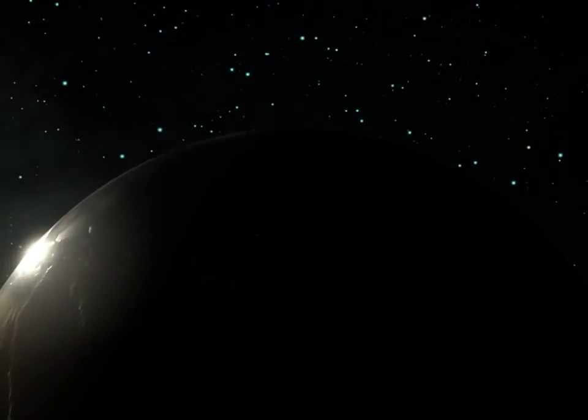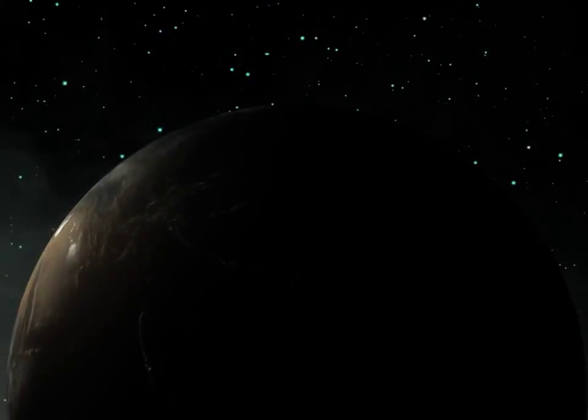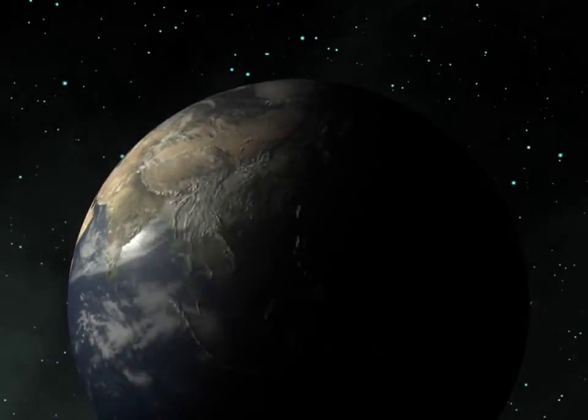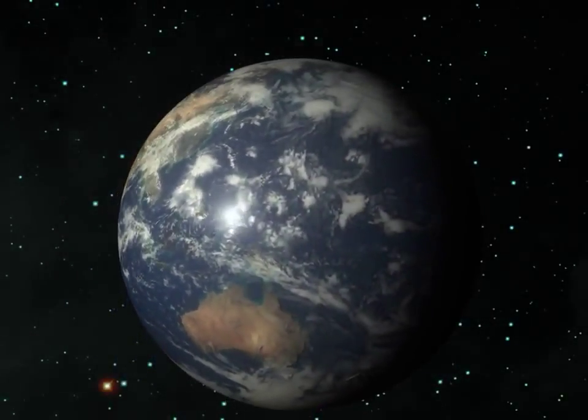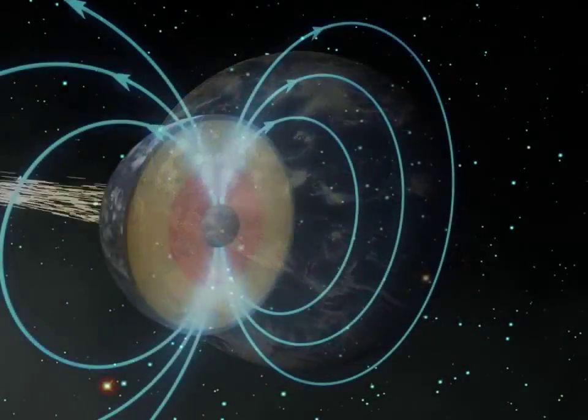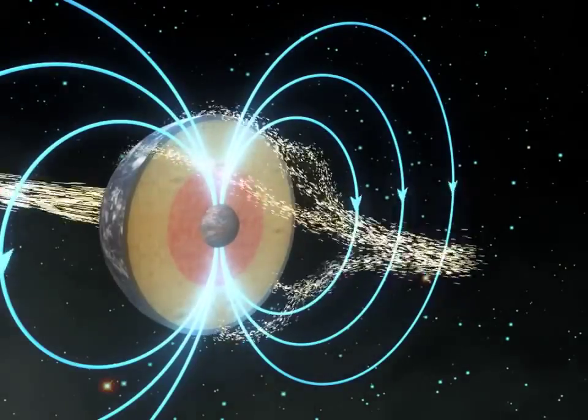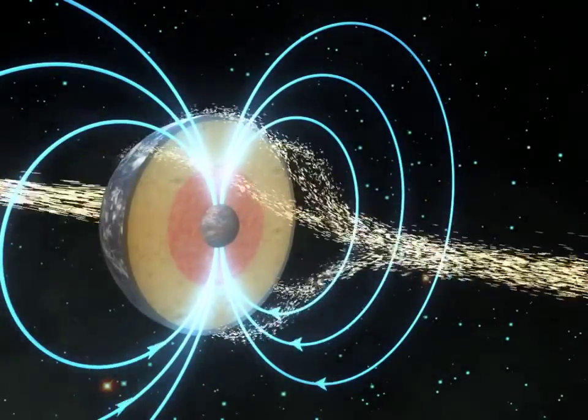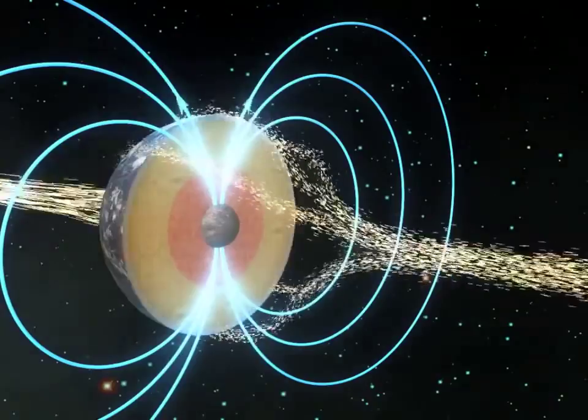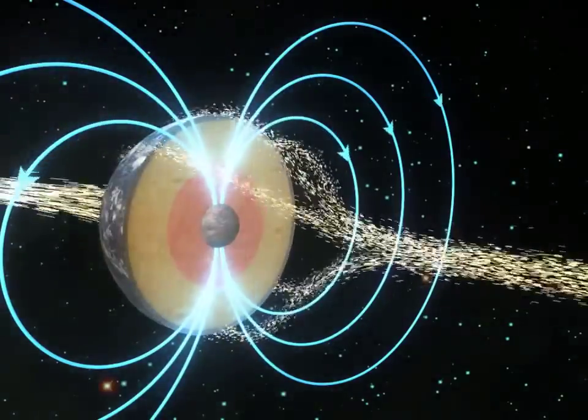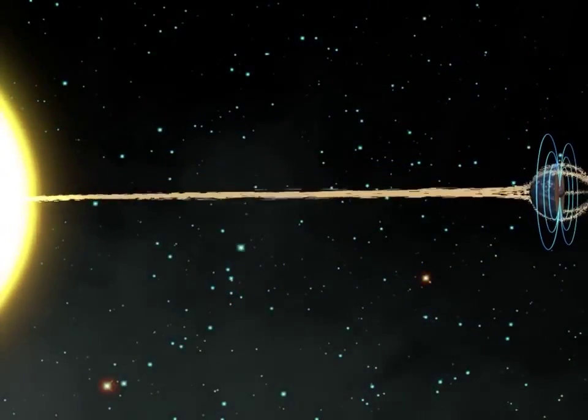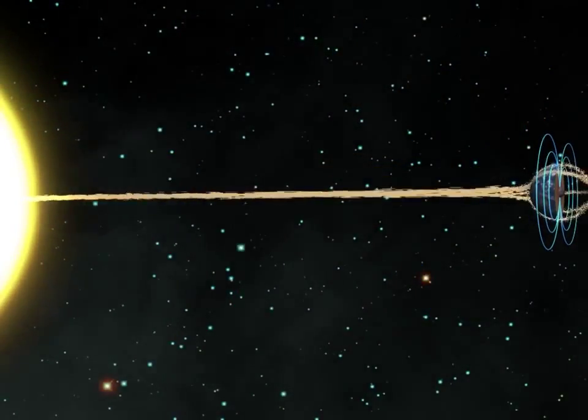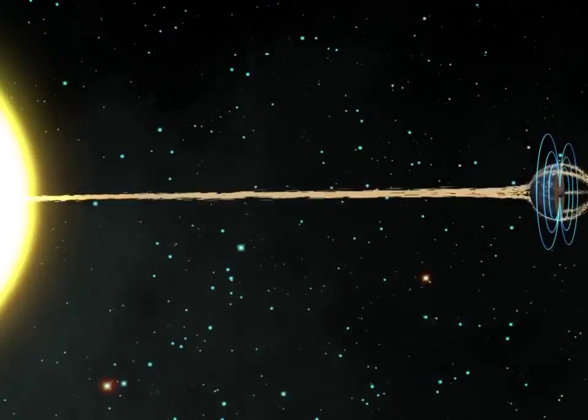But the core also has a very important function. It is responsible for the magnetic field of the earth. The magnetic field is generated in the inner core and the convections within the outer core result in the creation of magnetic fields. This magnetic field is what protects us from solar winds and high-energy particles of the sun.